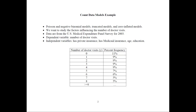We can summarize the data by looking at the number of doctor visits as the dependent variable. We have 0, 1, 2, 3, 4 and so on, and this is the percent frequency in the data. We have 11% zeros, 9% ones, and so on — those percentages go down as the numbers increase. This is how a count data dependent variable looks.